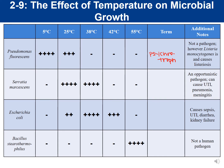Pseudomonas fluorescens — notice the name 'fluorescens.' This tells us the bacteria is bioluminescent; it produces a pigment that allows it to fluoresce under certain wavelengths of light. In the next slide, plates streaked with Pseudomonas fluorescens placed under fluorescent lamps show the bacteria does in fact fluoresce.